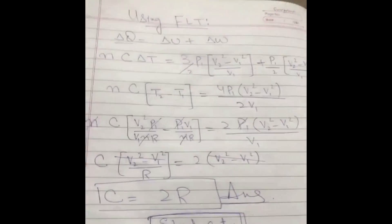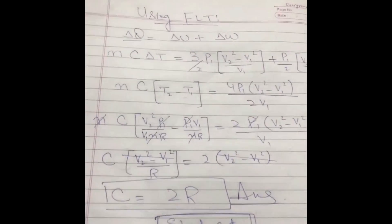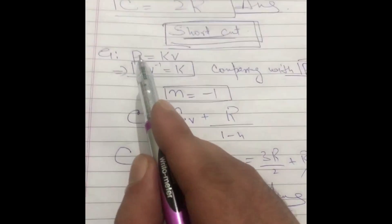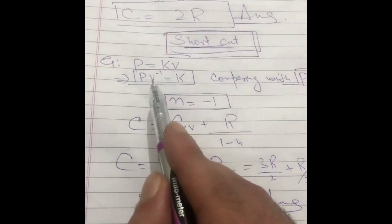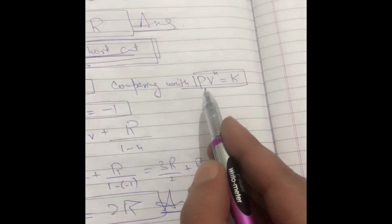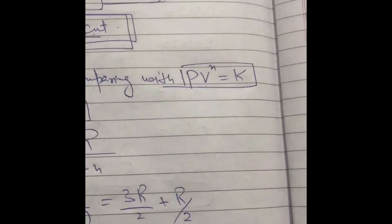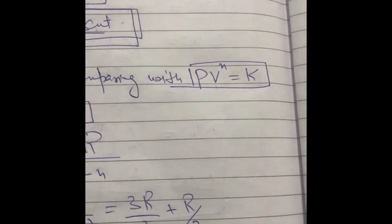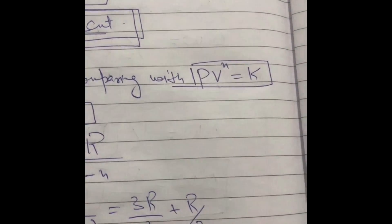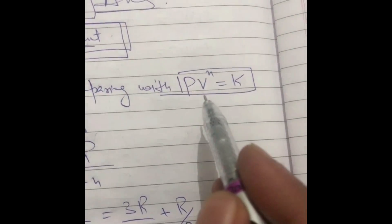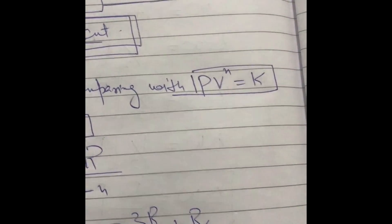Now I will solve the same question using a shortcut. The given process was p = kv. I rearrange this to get p·v^(−1) = constant. I compare this with the equation of state for any polytropic process: p·v^n = constant. Note that this is different from the adiabatic process p·v^gamma = constant — this is the general polytropic equation.